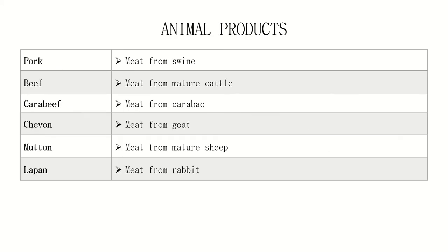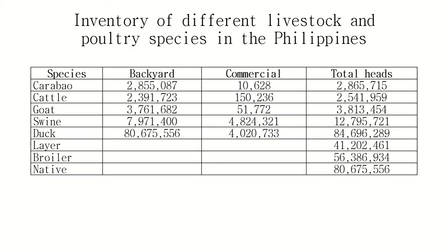Next is animal products. Pork is meat from swine. Beef is meat from mature cattle — we specify mature because meat from young cattle is called veal (V-E-A-L). Carabeef is meat from carabao. Chevon is meat from goat. Mutton is meat from mature sheep, while meat from young sheep is also called lamb. And lapan is meat from rabbit.